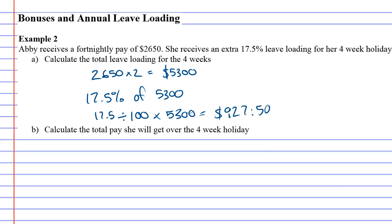17.5 divided by 100 times 5300 gives us $927.50. That is the total leave loading — basically the whole bonus she'll get during the holidays. Now question B says: calculate the total pay she will get over the four week holiday. Remember, $927.50 is just her bonus, not her total pay.